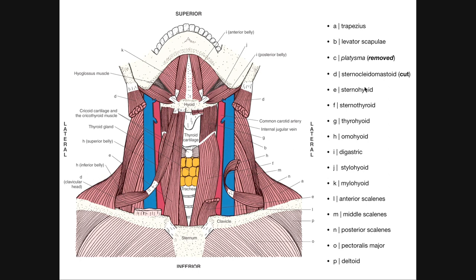E is sternohyoid — originating on the sternum and ascending to insert on the hyoid. F is sternothyroid — originating on the sternum and inserting on the thyroid cartilage. This insertion is specifically on the oblique line of the thyroid cartilage. G directly above it is thyrohyoid — originating on that oblique line of the thyroid cartilage and inserting on the hyoid bone.